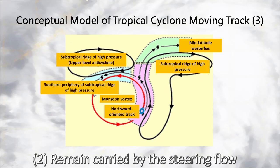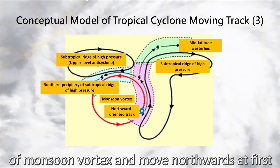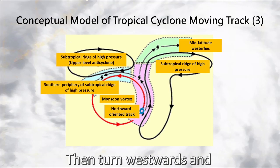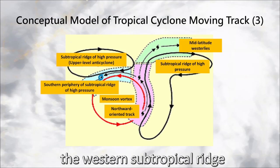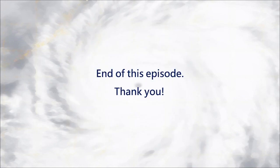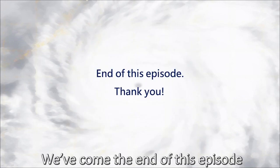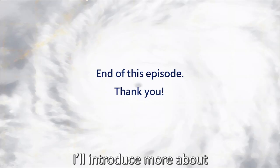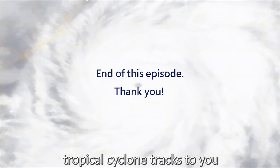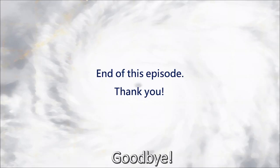In the second scenario, the cyclone remains carried by the steering flow of the monsoon vortex and moves northwards at first, then turns westwards and enters the steering flow of the western subtropical ridge. We've come to the end of this episode. In the next episode, I'll introduce more about tropical cyclone tracks to you. Goodbye!